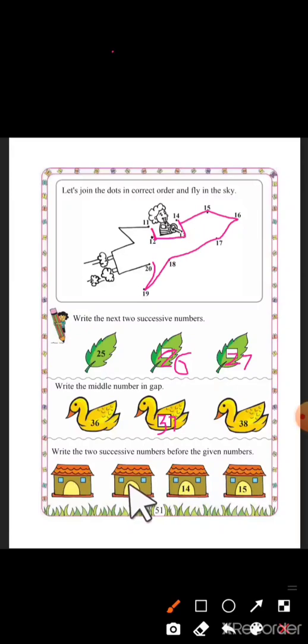Before 14, number 13 will come, and before 13, number 12 will come. Very good. Now this is 12, 13, 14, and 15.